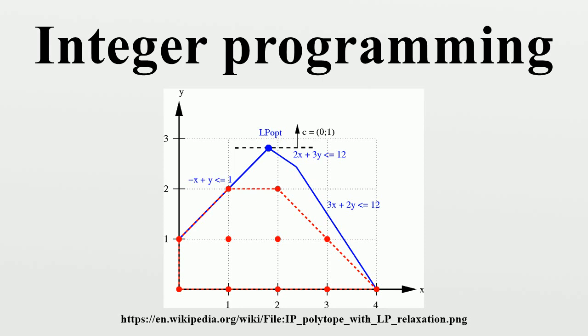Integer programming is NP-hard. A special case, 0 to 1 integer linear programming, in which unknowns are binary and only the restrictions must be satisfied, is one of Karp's 21 NP-complete problems.